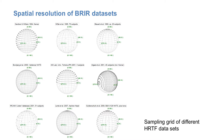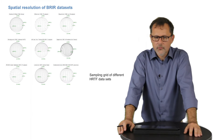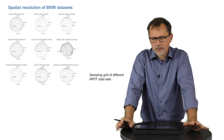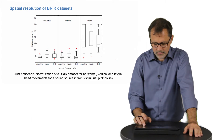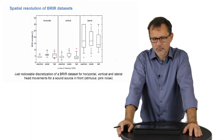If the sampling grid is too coarse, the same effect will be experienced as with high latency: the source will first move with your head and then jump back to the original position when the next grid point is reached. How high the resolution has to be in order to avoid audible artefacts can be tested in a listening test, where we have evaluated the required resolution for horizontal, vertical and lateral head movements.